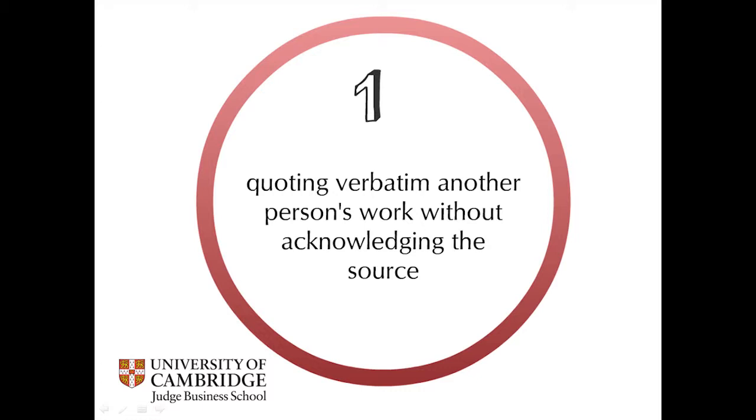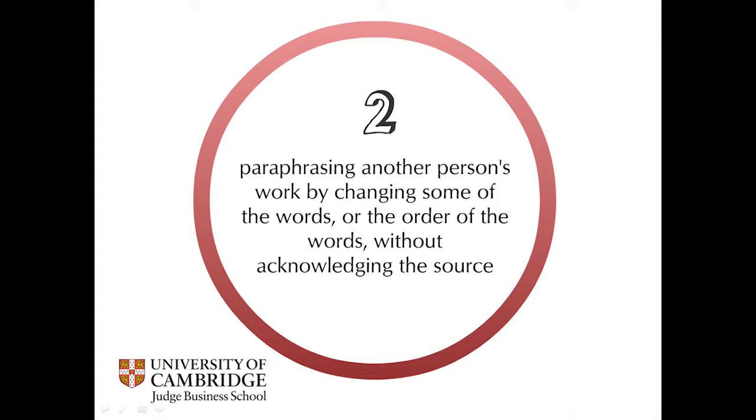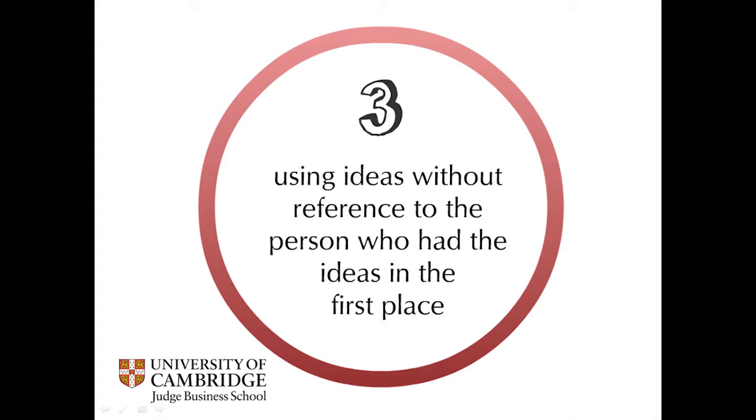We started off the session in class with an exercise to find out what your plagiarism score was. We ran through six different types of plagiarism. Number one: quoting verbatim another person's work without acknowledging the source. Two: paraphrasing another person's work by changing some of the words or the order of the words without acknowledging. Three: using ideas without reference to the person who had those ideas — so it's ideas as well as words and text.